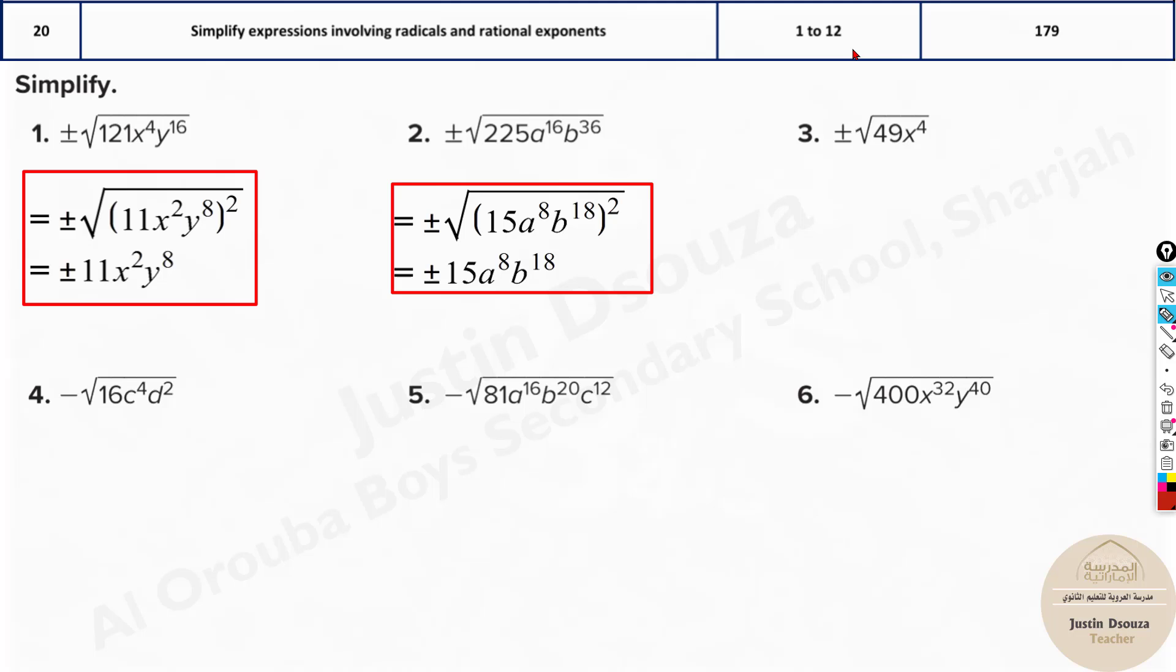Same way you can solve it. Now since it's writing, don't directly jump to the answer. See over here, what they have done is basically you know the answer you can directly write, plus or minus 7x power 2. What you need to do is write it up over here, 7x power 2 the whole square. So basically the square root and square cancels and then you get this.